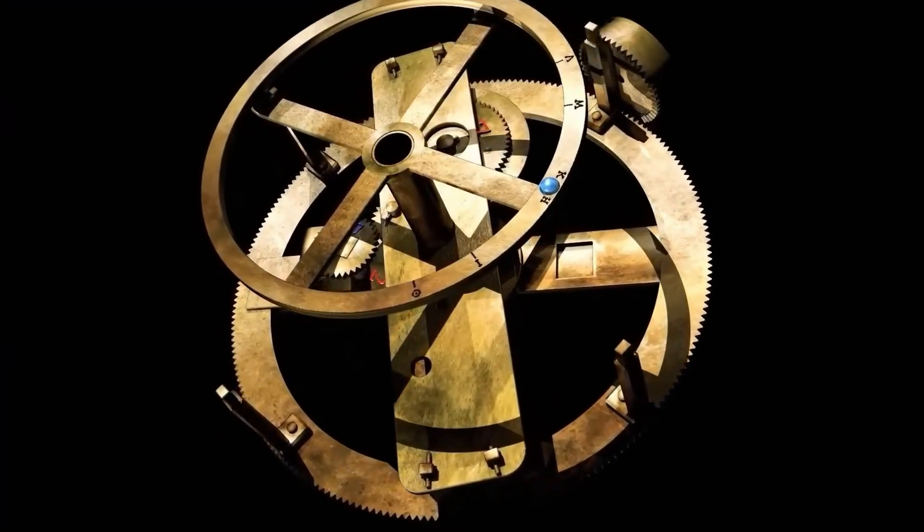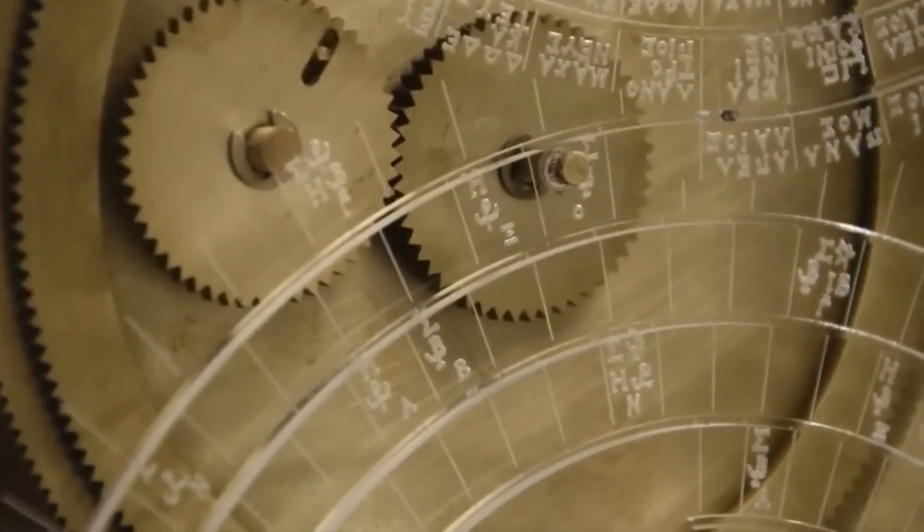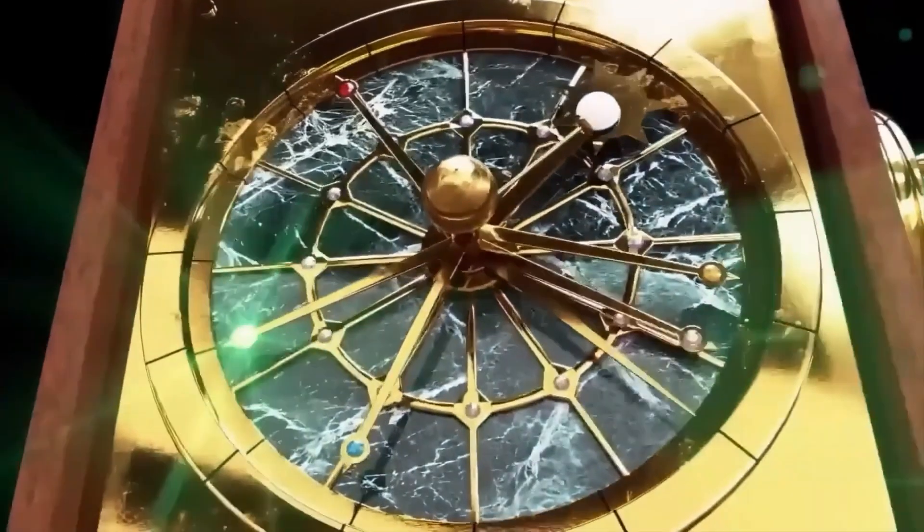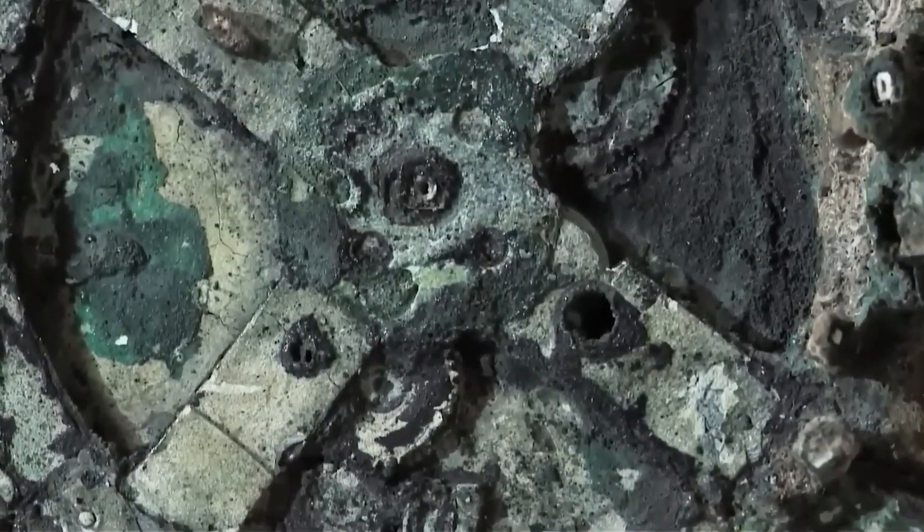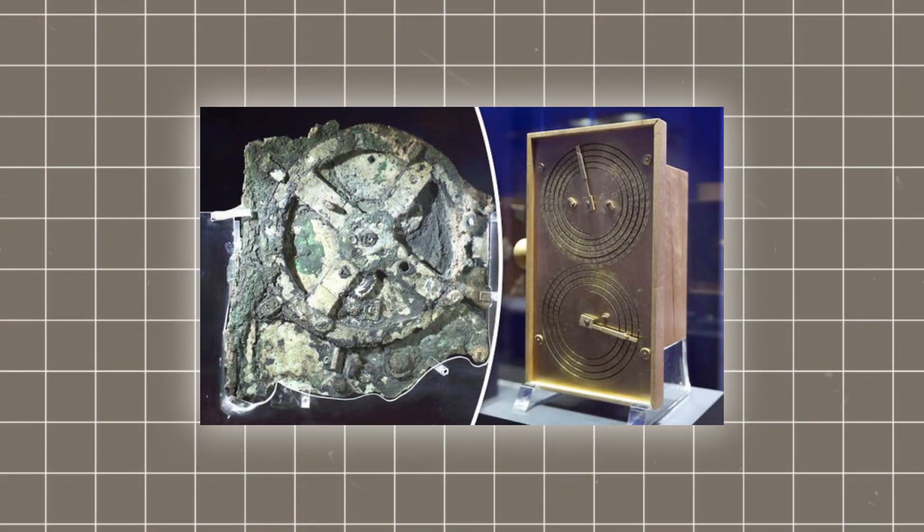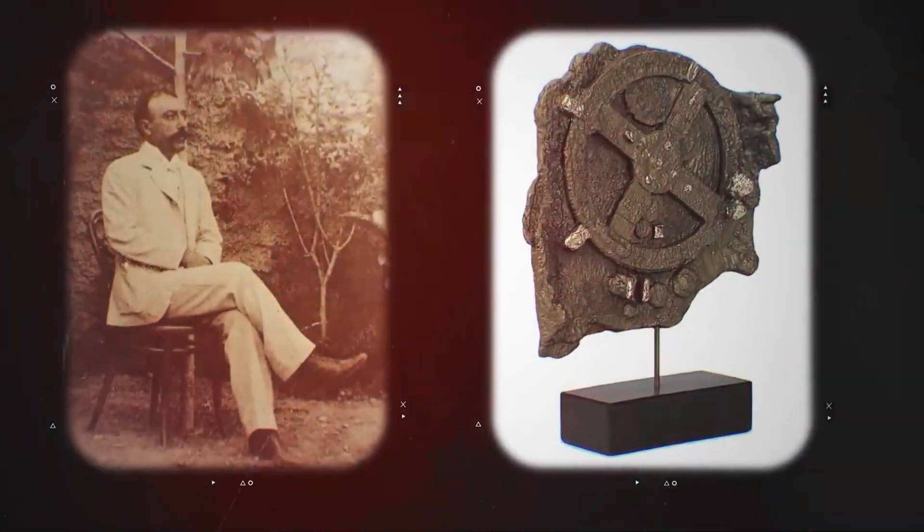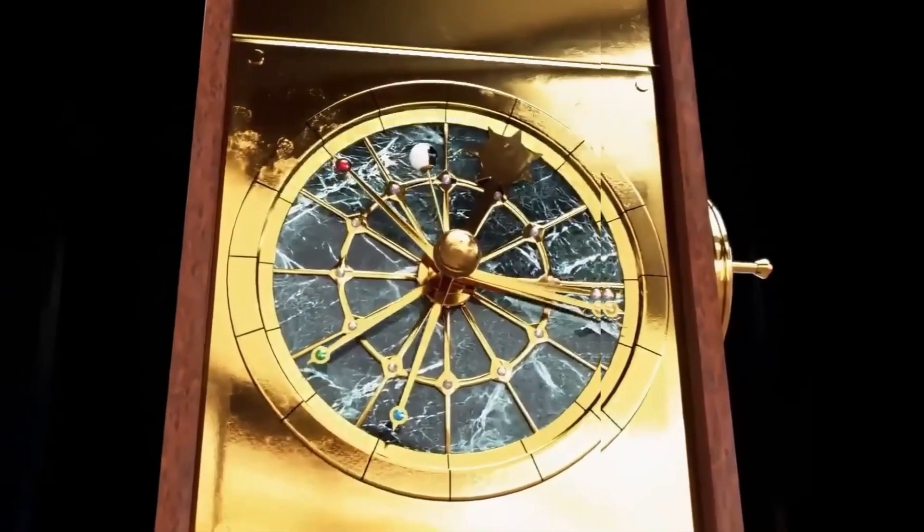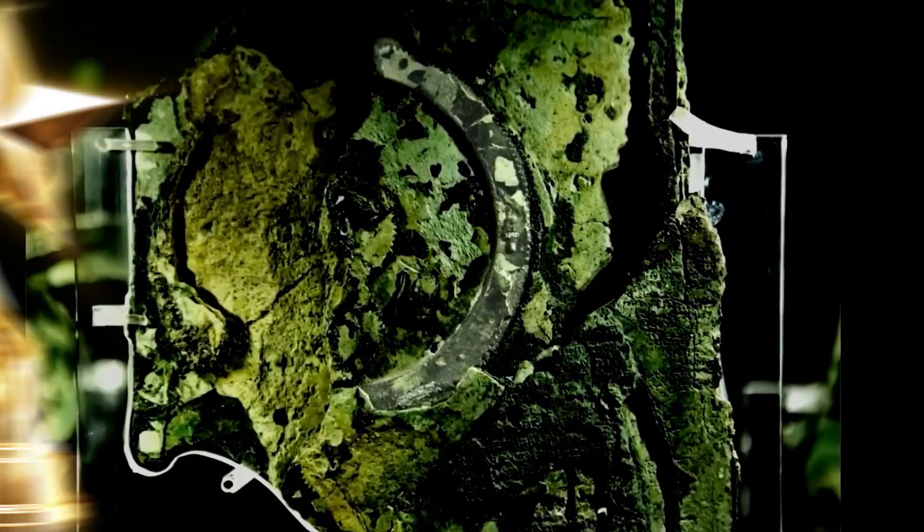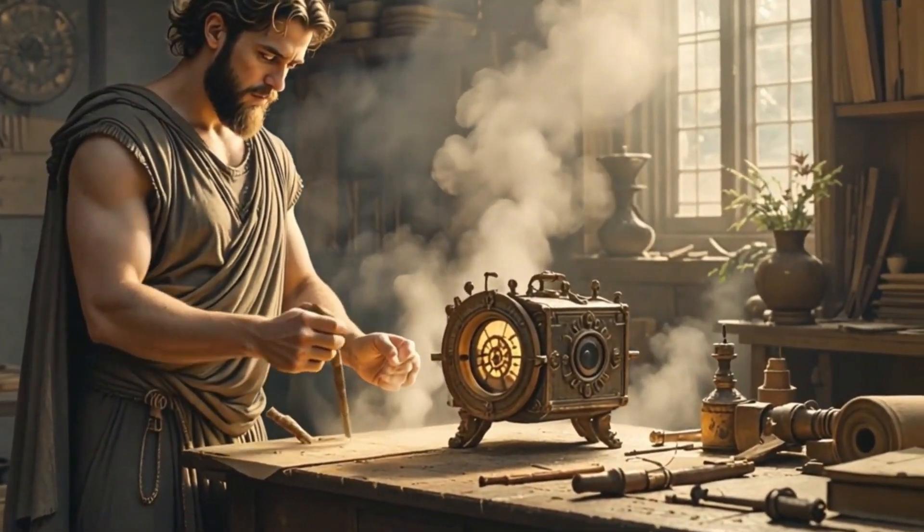For decades, the mechanism's corroded state limited research. Its 82 fragments, some reduced to atacamite by seawater, were too fragile to handle. In the 1950s, historian Derek J. DeSola-Price used X-ray and gamma-ray imaging to study the fragments, revealing more gears and inscriptions.